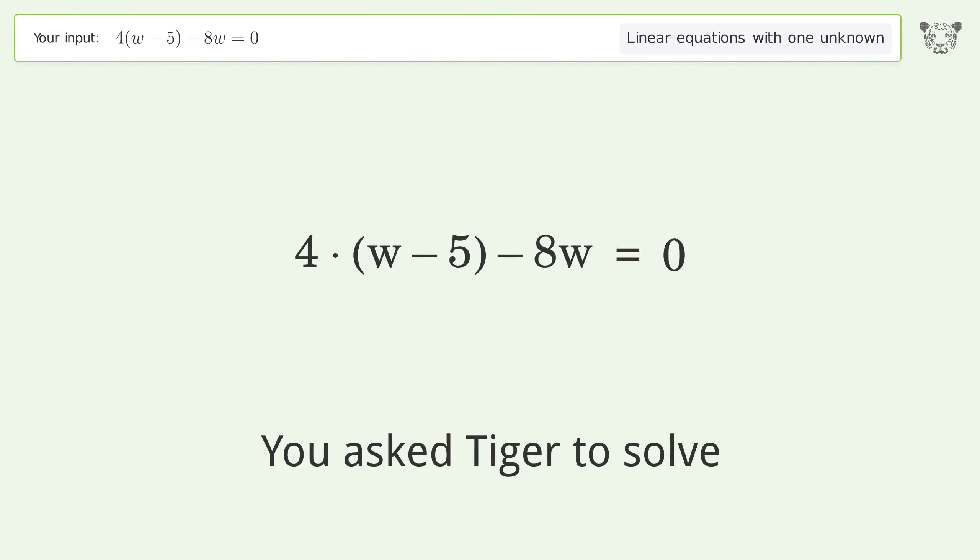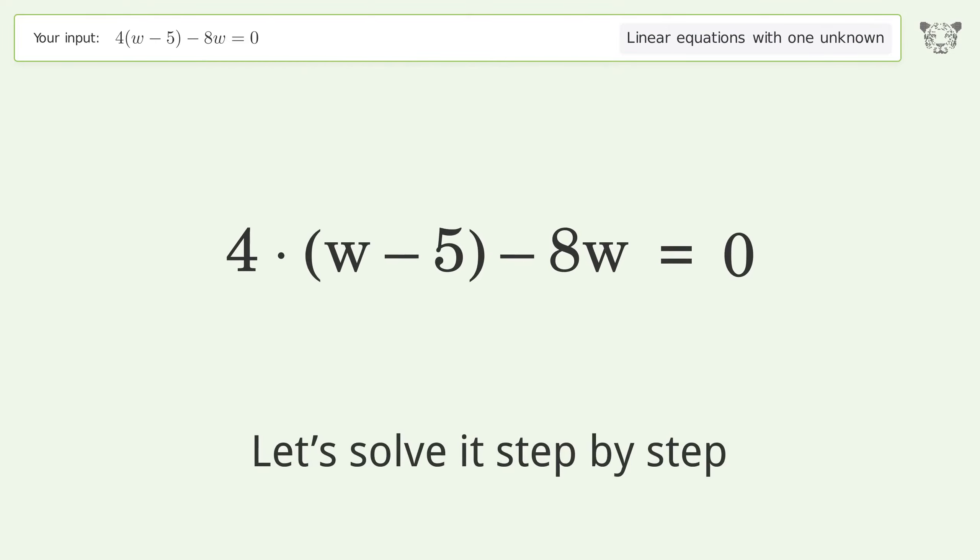You asked Tiger to solve this, which deals with linear equations with one unknown. The final result is w equals negative 5. Let's solve it step by step and simplify the expression.